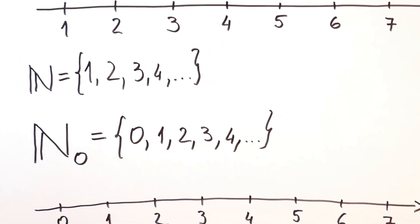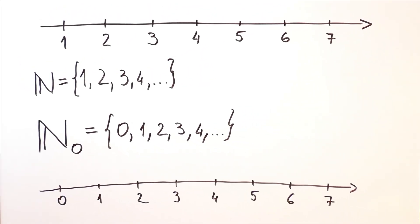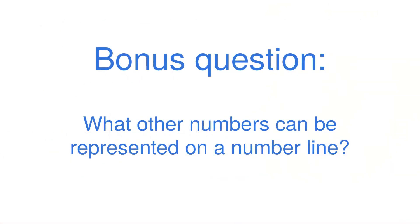We also saw that we can represent these numbers on a number line. And with that in mind, I leave you with this question. What other numbers can be represented on a number line?